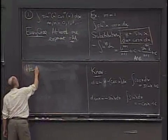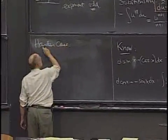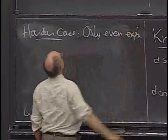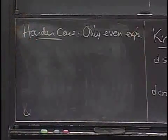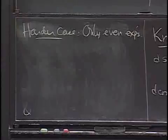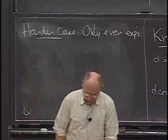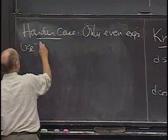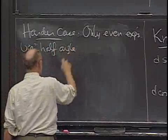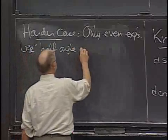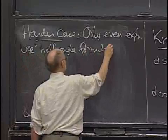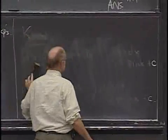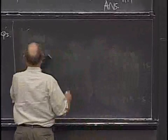So the harder case is when there are only even exponents. I'm still trying to integrate the same form, but now all the exponents are even. So we have to do some game, and here the game is use the half-angle formula, which I've just erased very sadly on the board here. Maybe I'll rewrite them over here so we have them on the board.